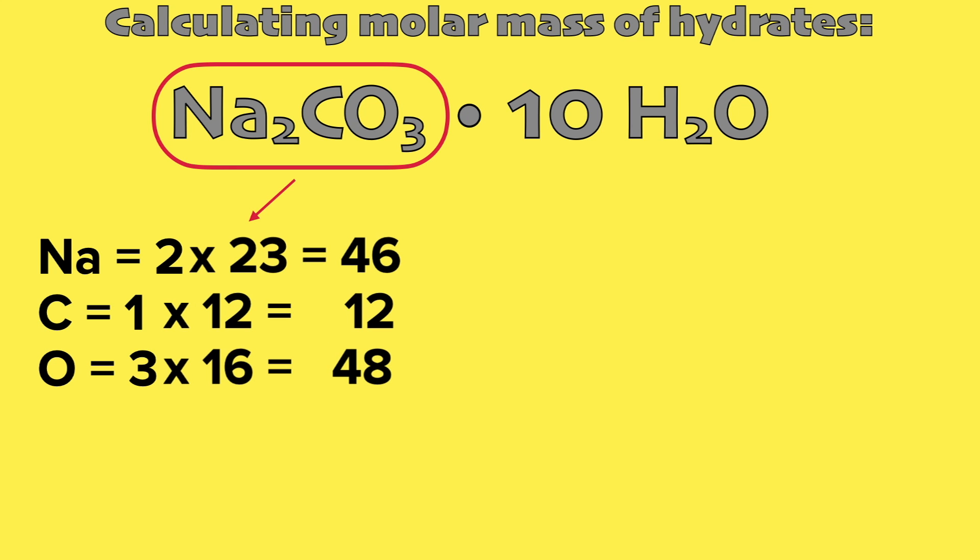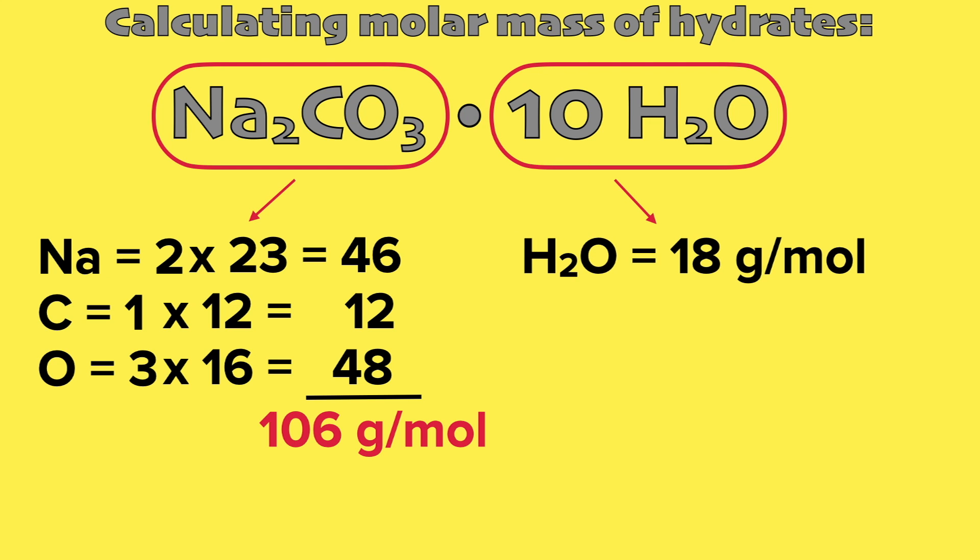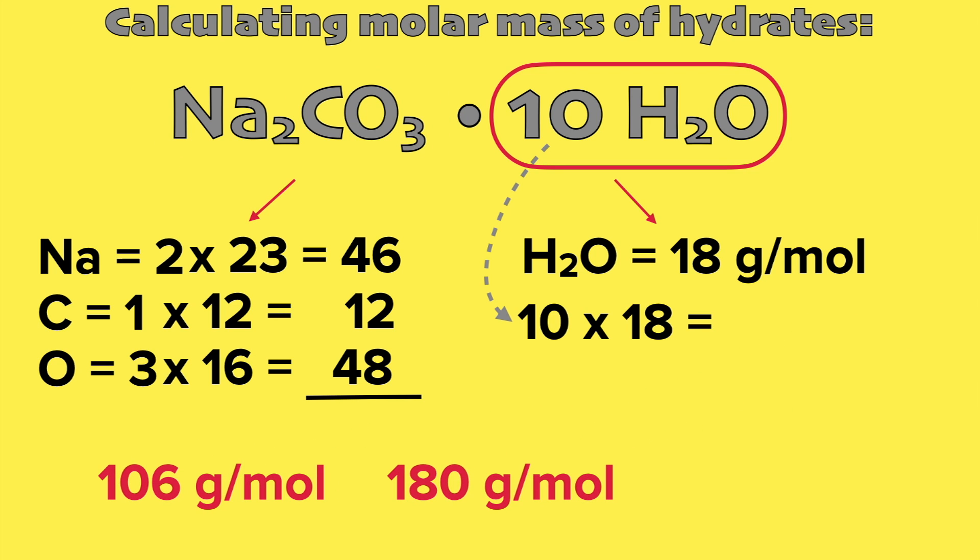Multiplying by their molar masses, we get these values. We add them and we will get 106 gram per mole for the first part. Now for the second part, take note that water or H2O is always 18 grams per mole. Multiply that to the number before it, which in our case is 10, to get 180 grams per mole. Add the two final values and we will get 286 grams per mole as the molar mass of this whole compound.